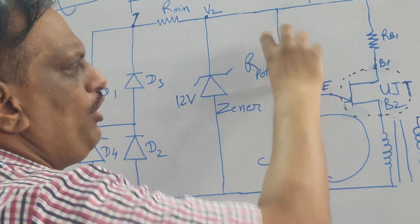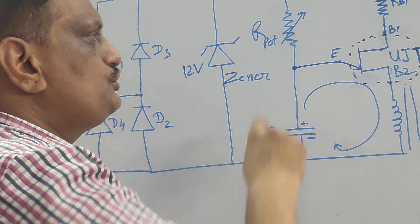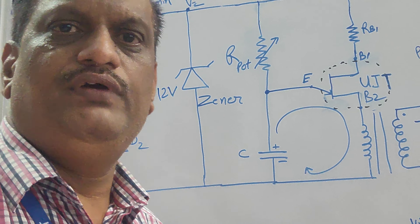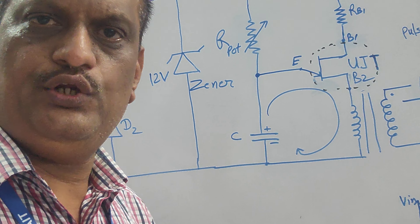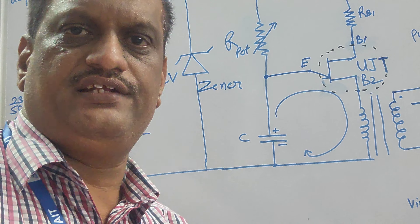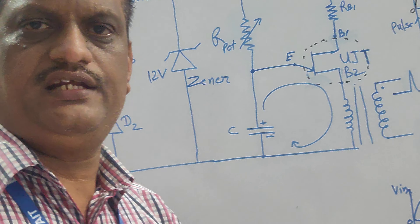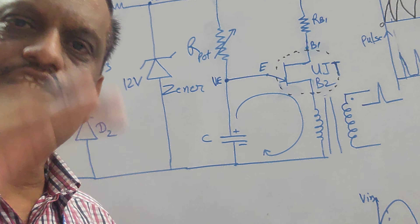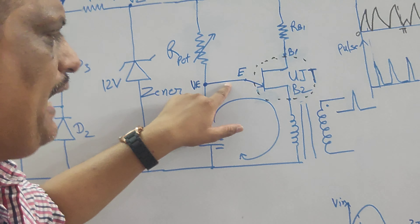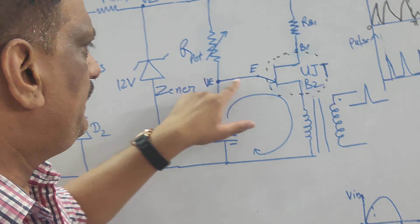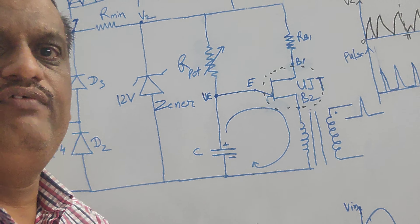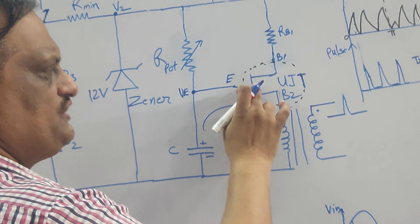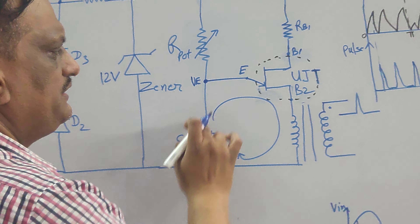Depending upon the pot position, how much current will flow through the capacitor — as this voltage is applied, the upper plate of the capacitor becomes positive and the lower plate becomes negative, and the potential on the capacitor keeps on increasing. When the potential on the capacitor increases, the emitter voltage VE of the UJT also increases. At a particular voltage, this UJT will start conducting. When the UJT starts conducting, the capacitor gets a path to discharge, because the UJT acts as a switch. When this switch closes, the capacitor starts discharging through it.